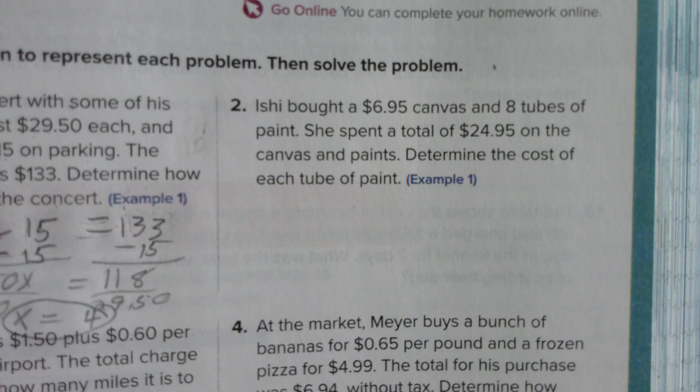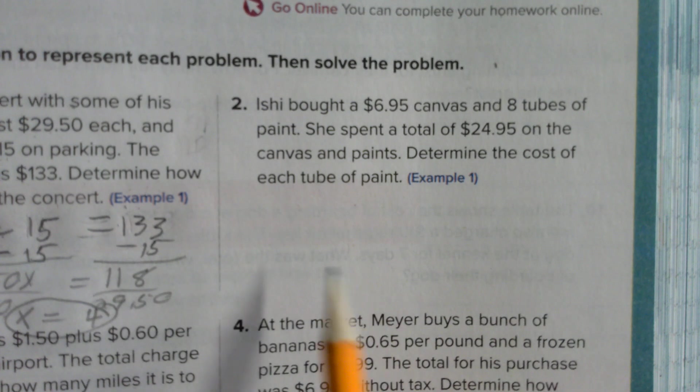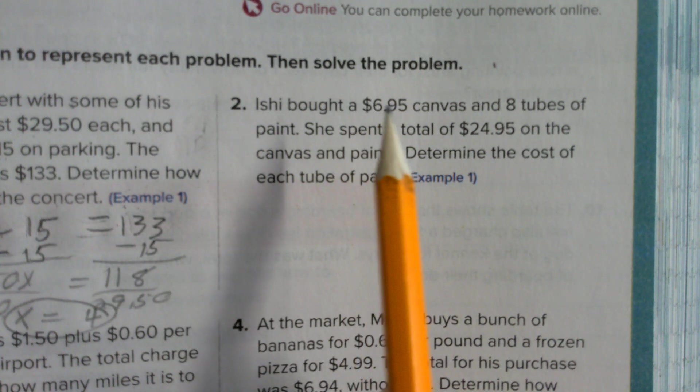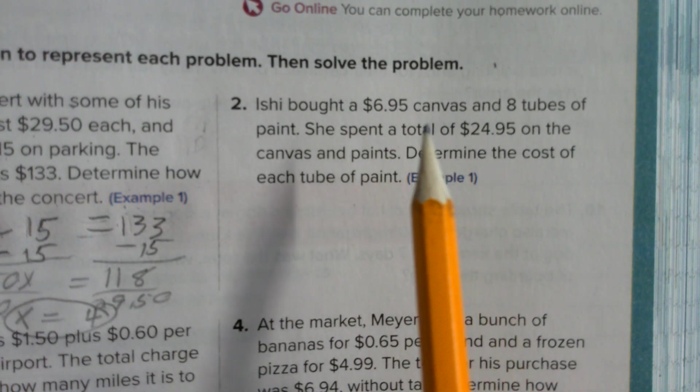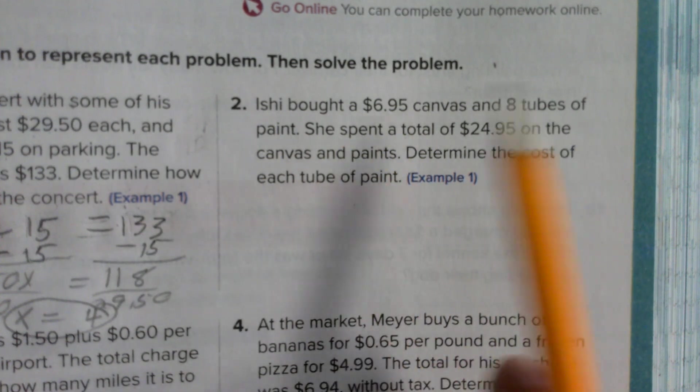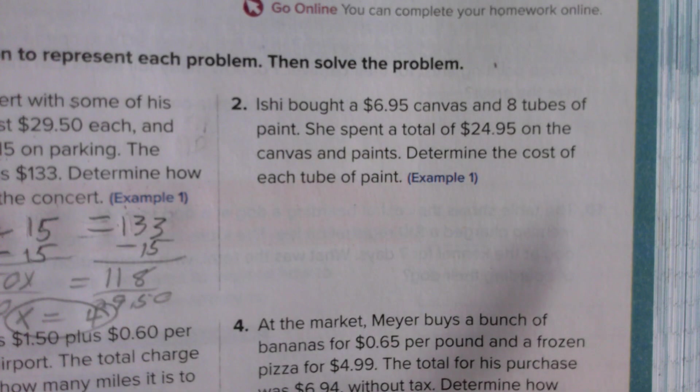Okay, my homework. This is Mr. Dorsey again. Homework for tonight is four problems from the book. I'm going to do number two from the book just so you have another example. This talks about Ishi, who bought a $6.95 canvas, so they're probably a painter, and eight tubes of paint.